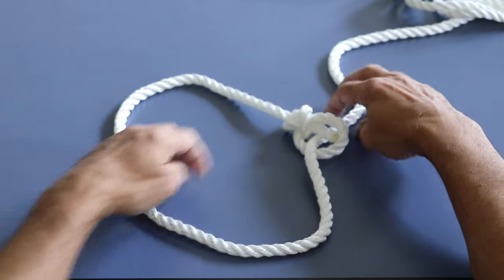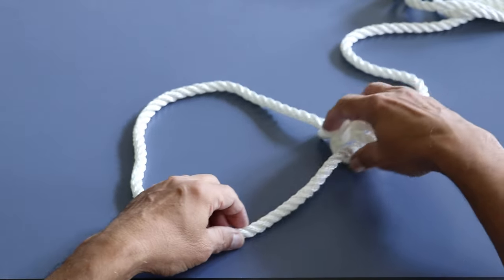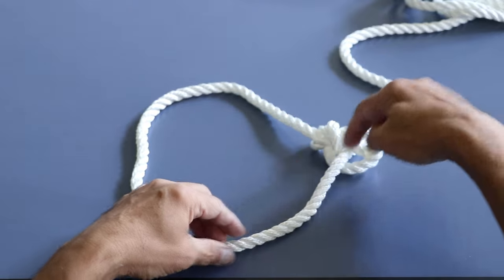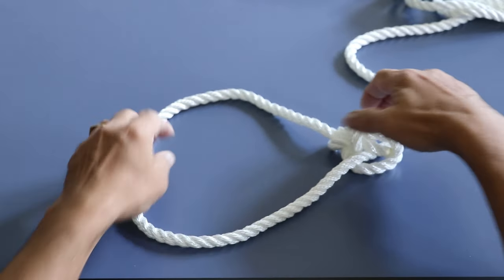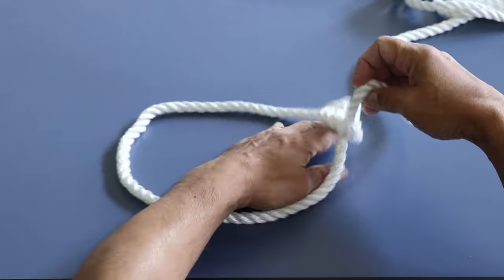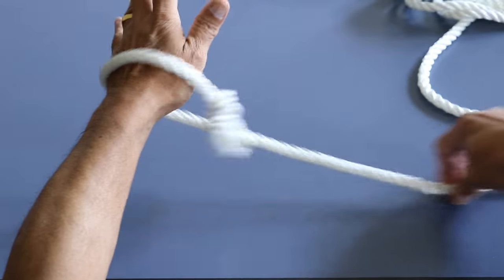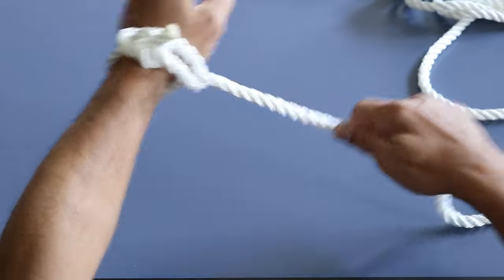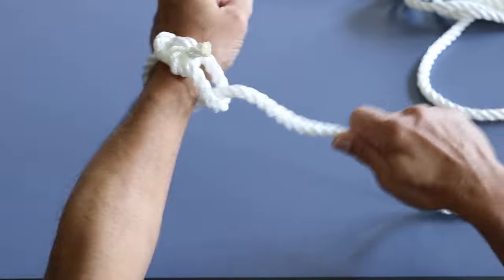So you have a running bowline. So the bowline is here, the rope is running through the bowline so you can put something and then, for example, you can pull something and then you can really pull.